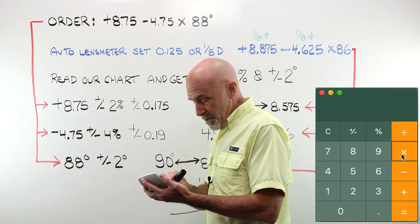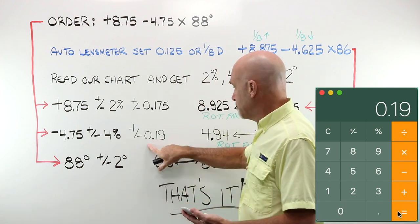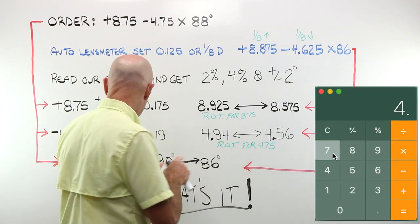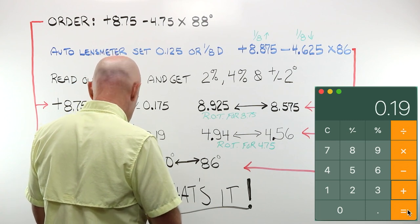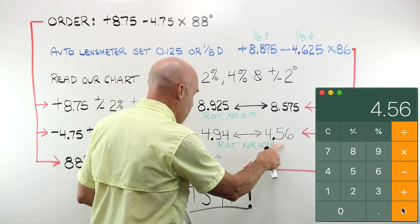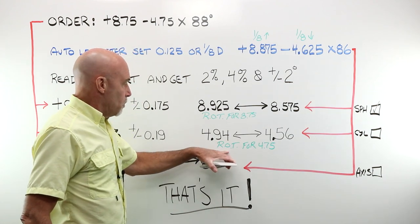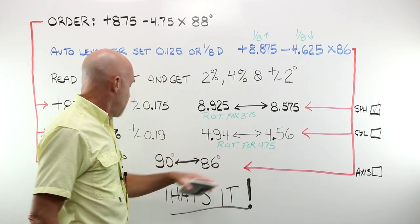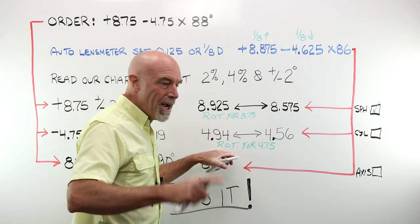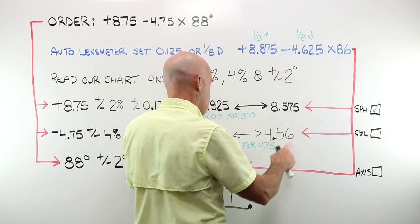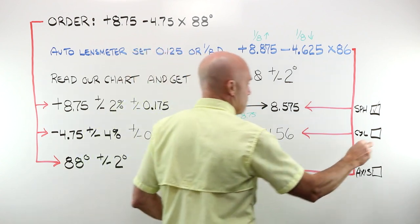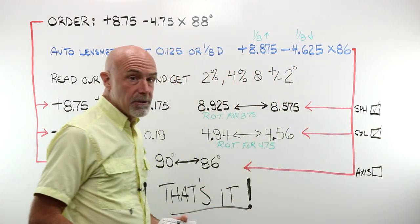4.75, 4.75 times 0.04 is 0.19. That's my tolerance in diopters. 4.75 plus 0.19 is 4.94. 4.75 minus 0.19 is 4.56. The range of tolerance for 4.75 plus or minus 4% is this. Does what I actually got back from the lab, 4.625, fall between these two numbers? I'd say, yeah, it's probably like right about here somewhere. My cylinder checks out. So far, so good.